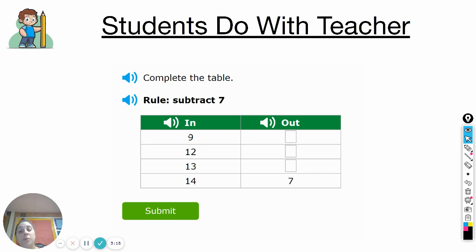So first we're going to start with nine. We know the rule is to subtract seven. So for every single one of these we're going to be doing nine minus seven, 12 minus seven, 13 minus seven.